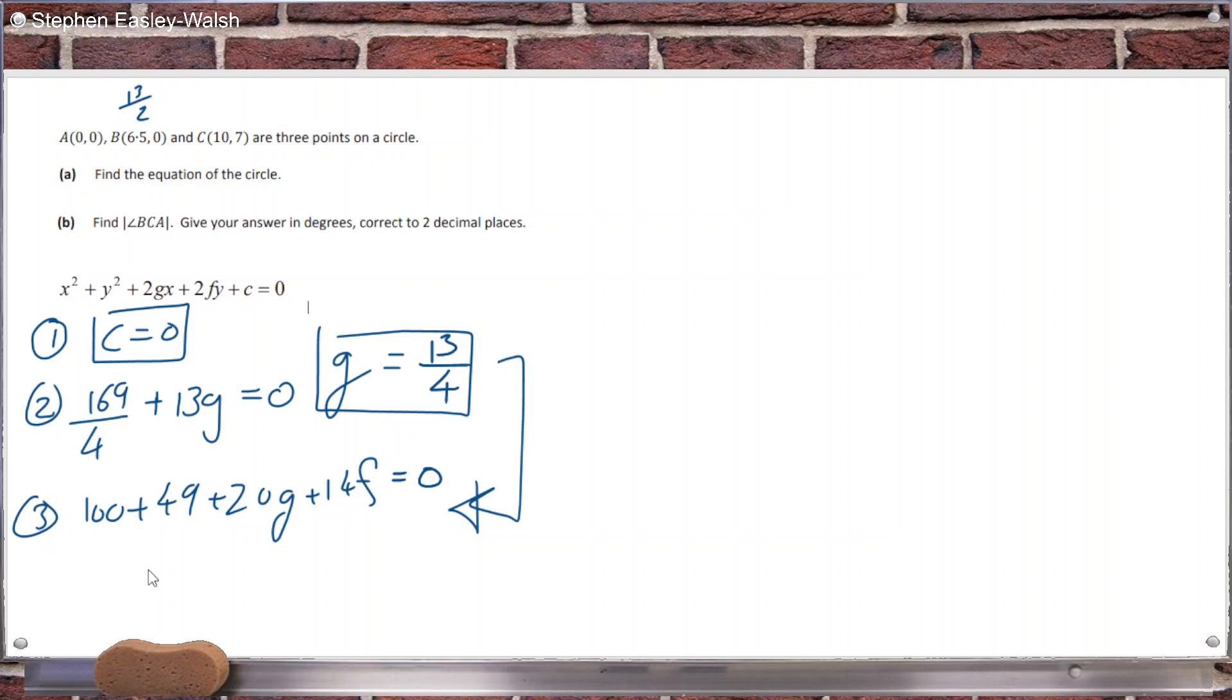100 plus 49 plus 20 times 13 over 4 divided by minus 14. That doesn't look right. 100 plus 49 plus 20 times G, which is 13 over 4. Yeah, no, it is 214 divided by 14. It doesn't look right. I got F is minus 107 over 7.